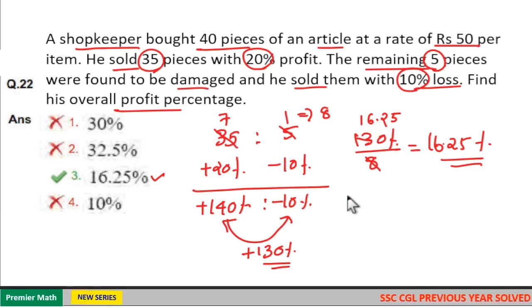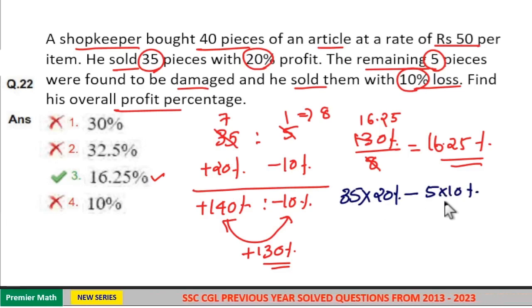Here even if you take 35 and 5, 35 into 20 percentage profit minus 5 into 10 percentage loss. This minus is because of the loss. Divide by 35 plus 5 is 40.